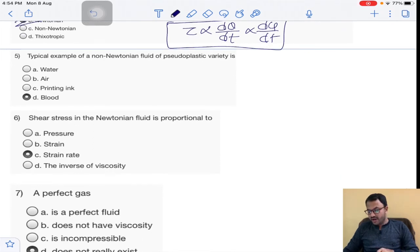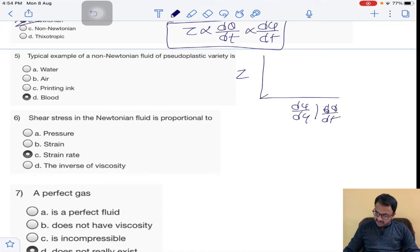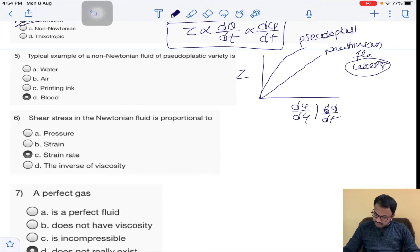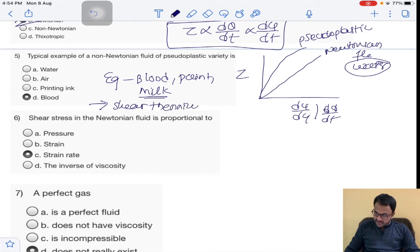A typical example of non-Newtonian fluid of pseudoplastic variety is: if you draw a graph between tau and velocity gradient du/dy or dθ/dt, you will get this is a Newtonian fluid, example is water. And this is one more type of fluid, we call it pseudoplastic. Examples are blood, paint, or milk. These fluids are also called shear thinning fluids. When they get heated they will get thicker and thicker. Answer is blood, option D.